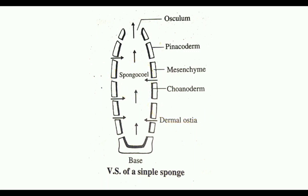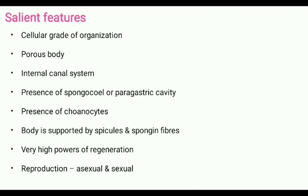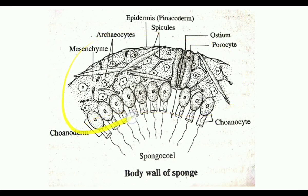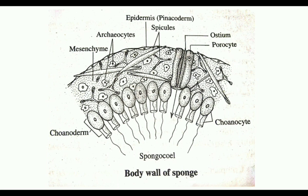The mouth and digestive system are absent in sponges. They possess unique flagellated and collared cells called choanocytes, which line the spongocoel and canal system. The body is supported by a gelatinous matrix supported by spongon fibers and spicules.